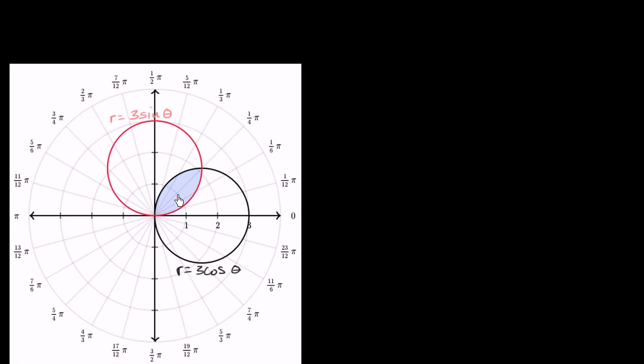What's interesting here is we're clearly bounded by two different polar graphs, and it looks like they intersect right over here. If we eyeball it, it looks like they're intersecting at when theta is equal to pi over four. We can verify that — cosine of pi over four is the same thing as sine of pi over four, so their point of intersection happens at theta equals pi over four. If that wasn't as obvious, you would set these two equal to each other and figure out the thetas where this actually happened.